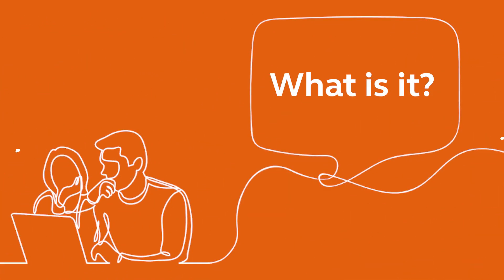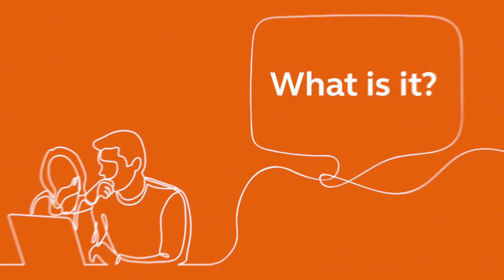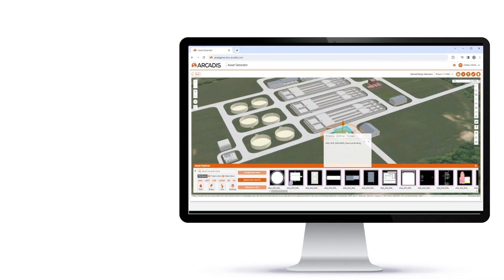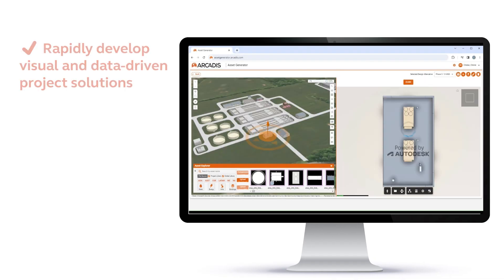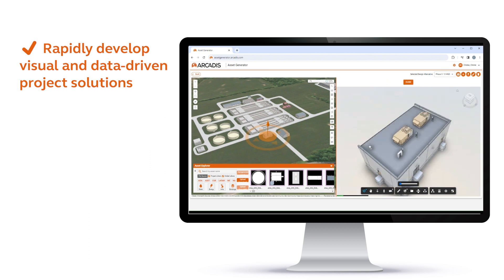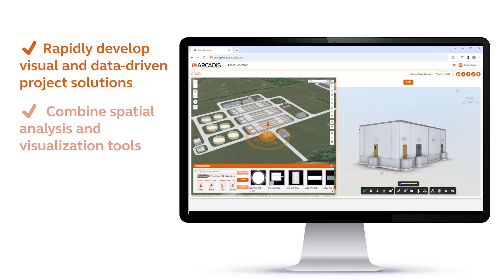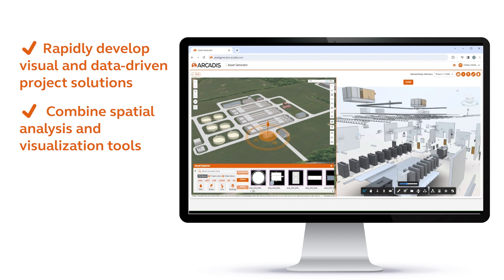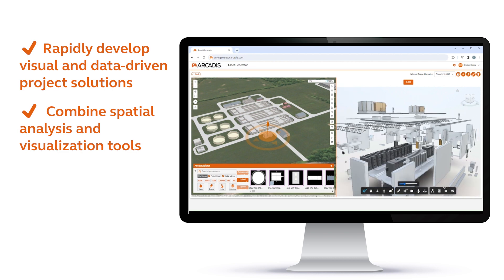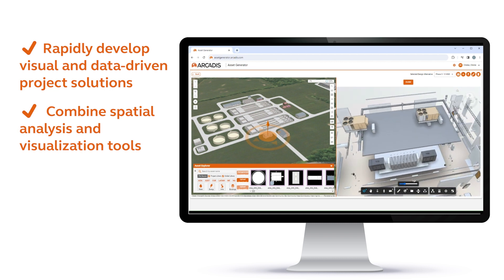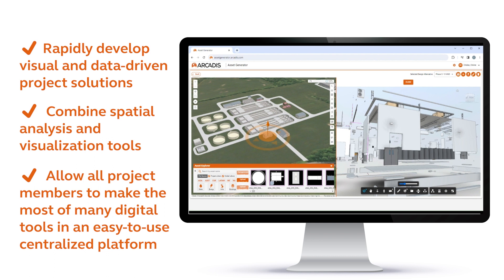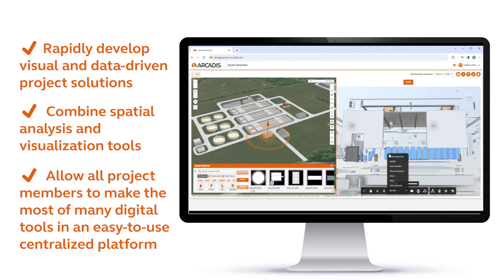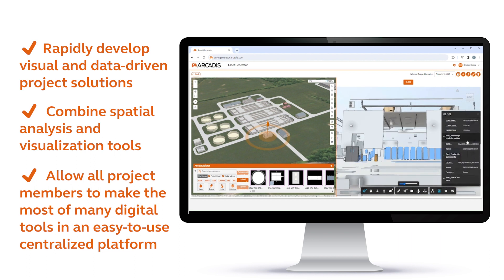So what is the Asset Generator? The Asset Generator is a planning and design automation tool aimed at rapidly developing visual and data-driven project solutions. It combines the spatial analysis and visualization tools of GIS with the building information modeling capabilities of Revit to allow all project members to make the most of many digital tools in a single, easy-to-use, centralized platform.